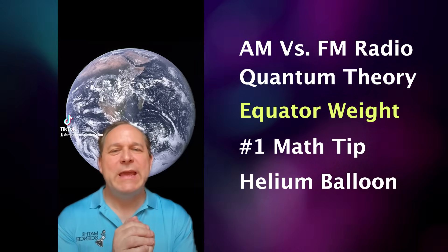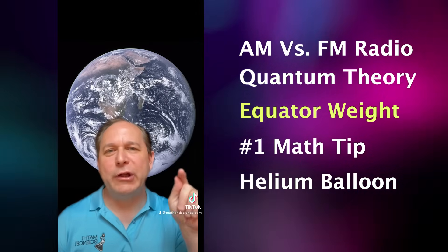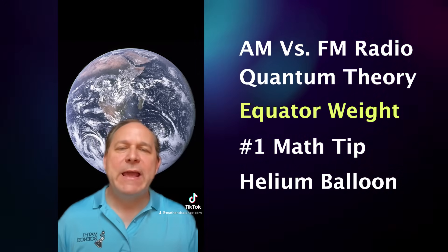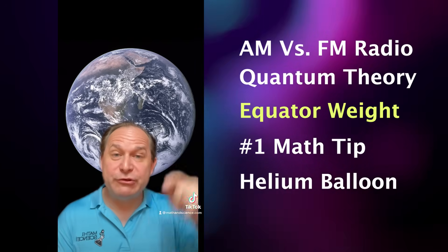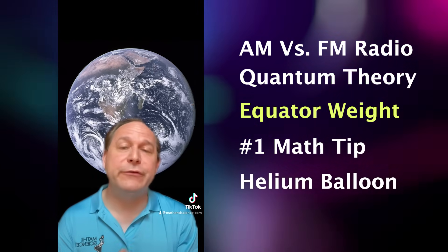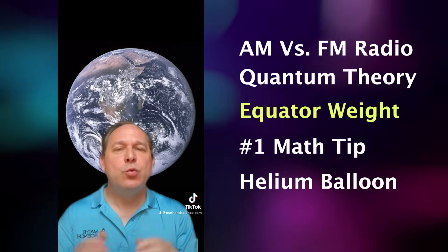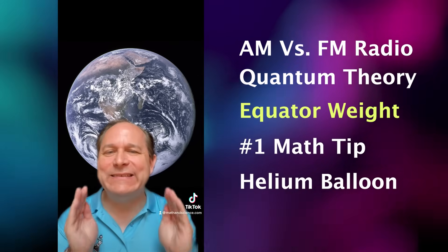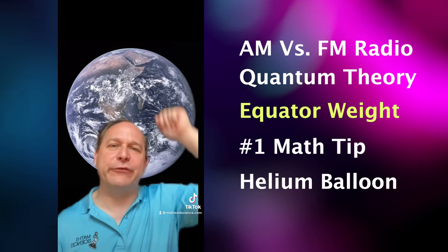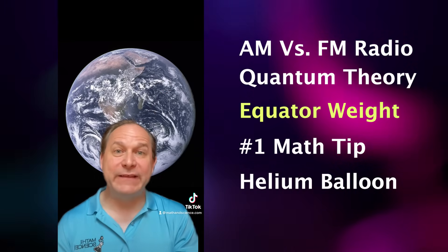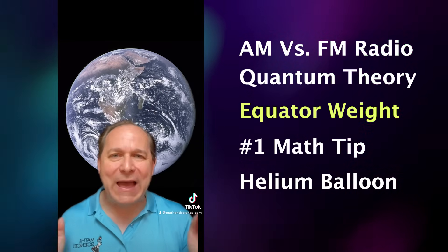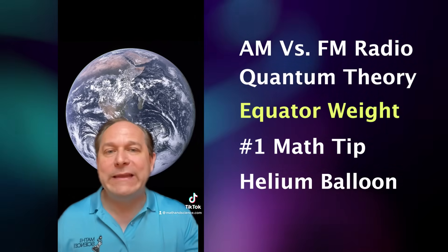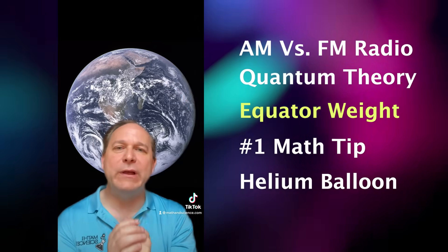Here's a question for you. If you're standing on the equator and you weigh X number of pounds, then you move to the North Pole and weigh yourself again, would you have exactly the same weight or would you weigh slightly different at the equator versus the pole? The answer is yes — you actually would measure a different weight on the equator versus the pole.